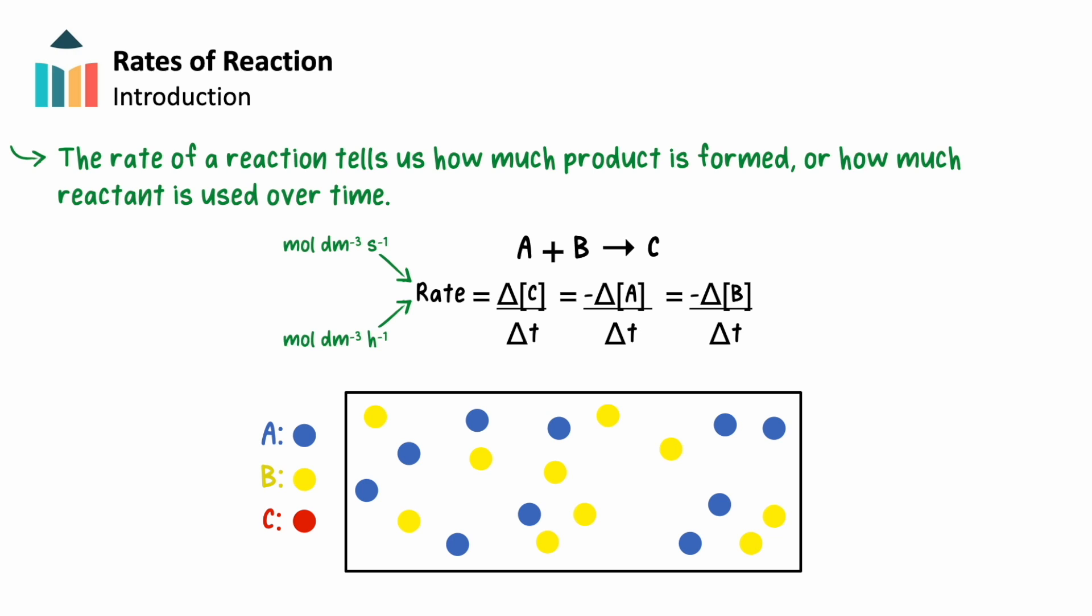The rate of a reaction does not usually stay the same as the reaction runs. As the reactants are used up, there are fewer reactant molecules to continue to collide and form additional product. So, the reactant rate decreases. The change in reaction rate depends on the mechanism of the reaction.